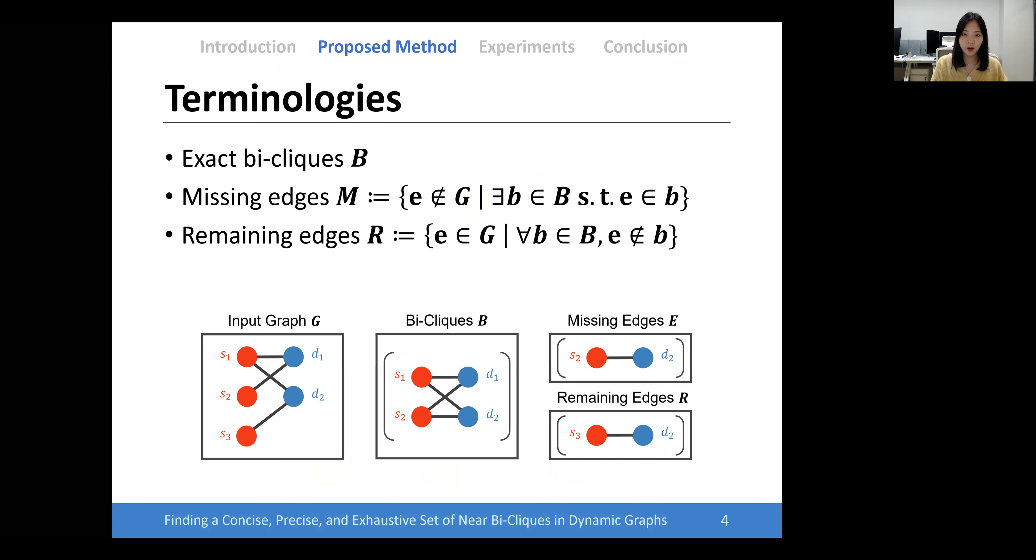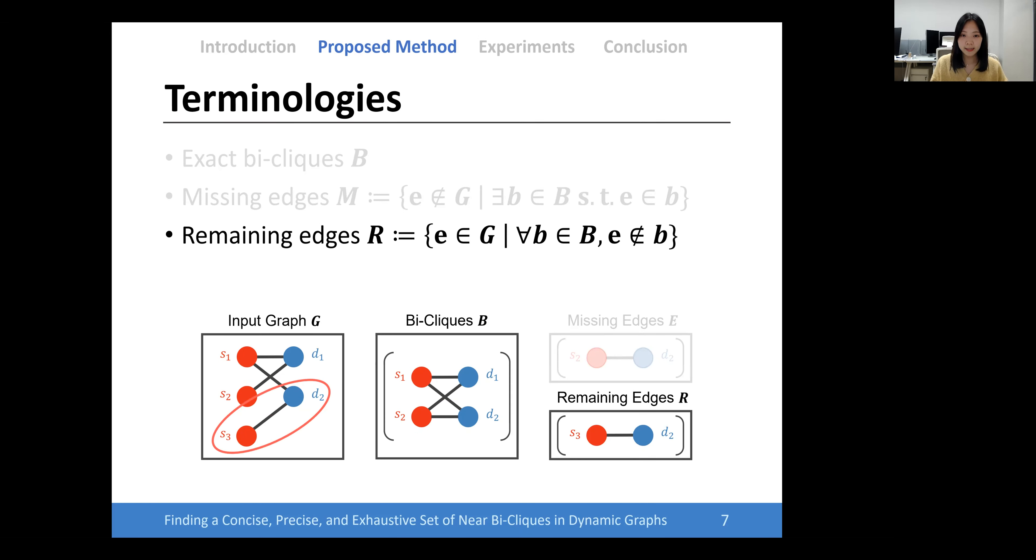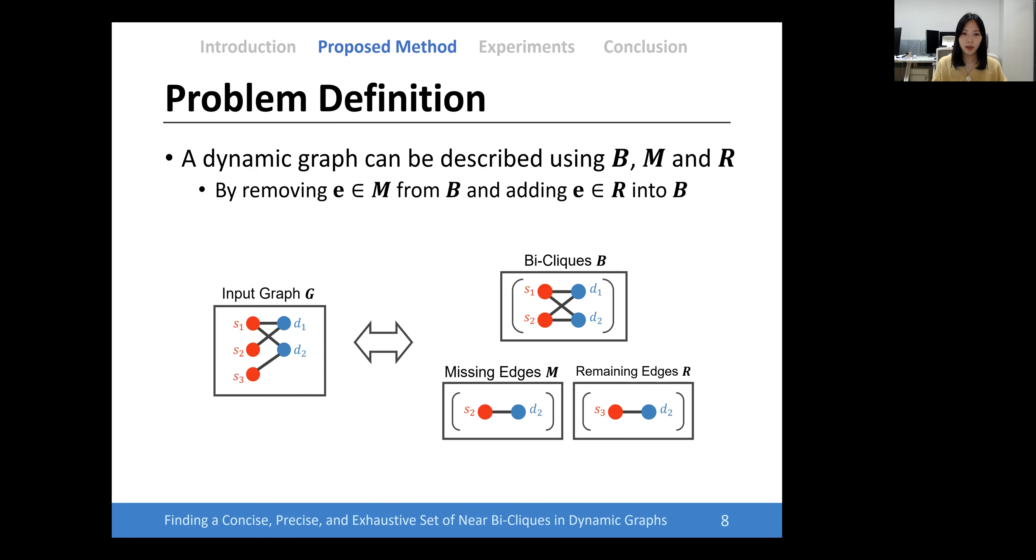First, I'll define some terminologies. Large B is the set of exact bi-cliques. Large N is the set of missing edges, where each edge is not in the given graph but in the exact bi-clique. Large R is the set of remaining edges, where each edge is in the given graph but not in any of the exact bi-cliques. A graph can be described by removing missing edges from exact bi-cliques and adding remaining edges into exact bi-cliques.